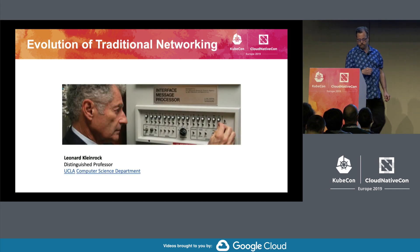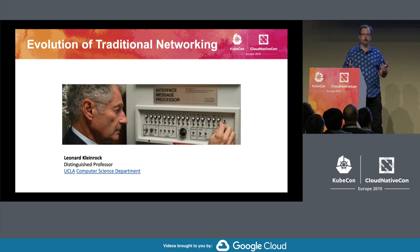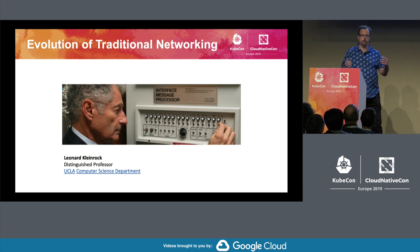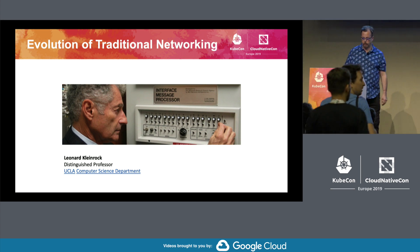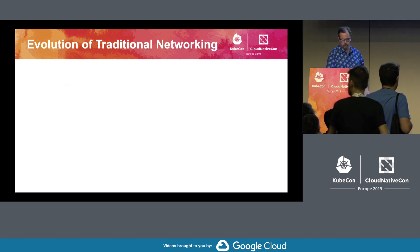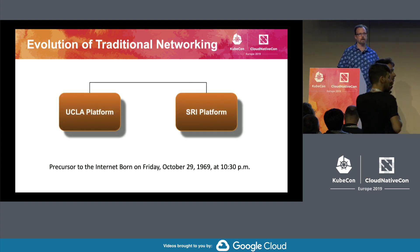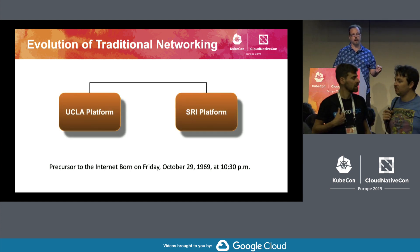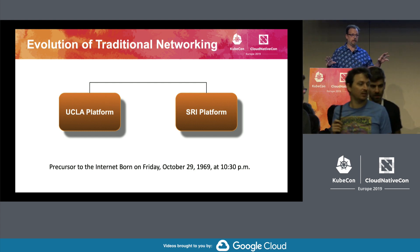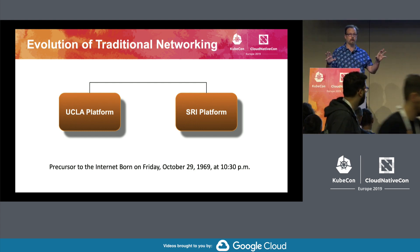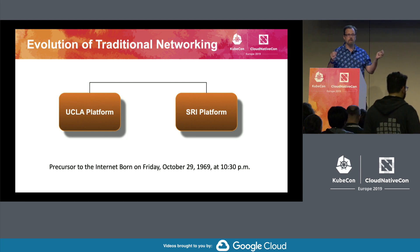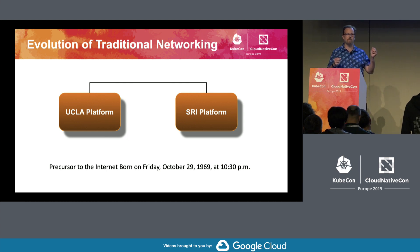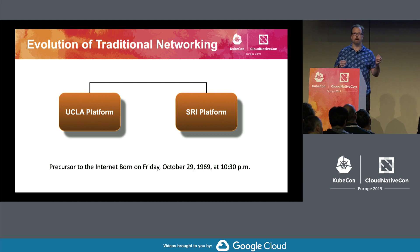Leonard Kleinrock sort of invented ARPANET — there were a lot of people involved. He's a professor who had many students helping him. The first thing he did was connect two wide area networks: UCLA and SRI, over two PDP-11s connected over wide area networks. That was one of the three vectors we needed to make networking a thing. The entire internet in 1969 was pretty boring — just four nodes, four PDP-11s.